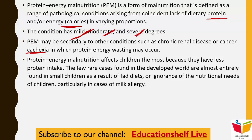Cachexia is not a disease in itself. If you have any underlying illness — suppose cancer cachexia — it will be due to cancer. So if you already have cancer, you will experience muscle loss, and nutritional supplementation alone will not be able to reverse this. PEM-like wasting can also occur in chronic renal disease or cancer cachexia.